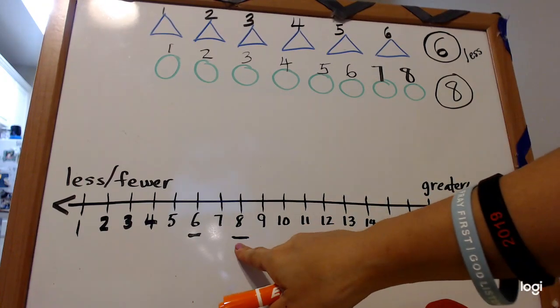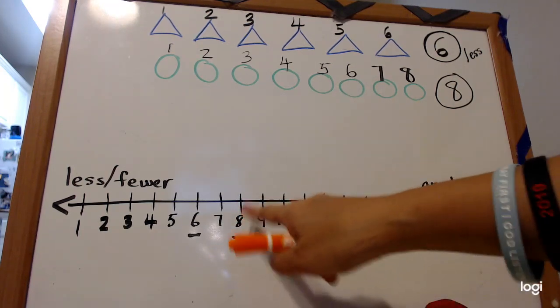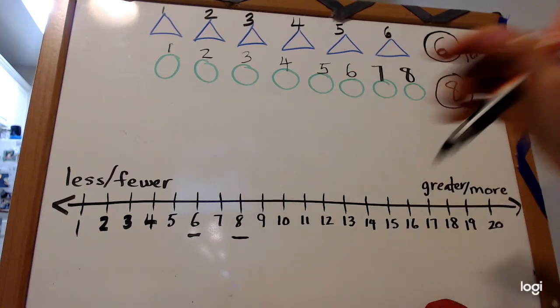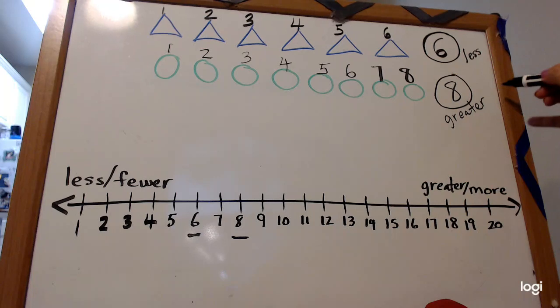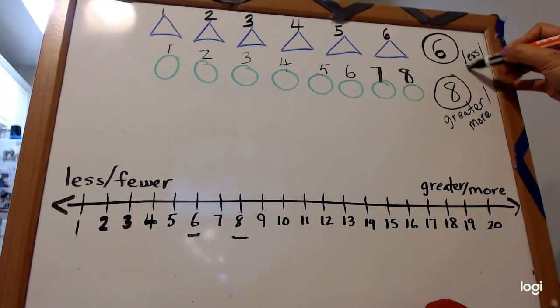Now eight compared to six, is eight greater or less? Since eight is on the greater side, eight is actually greater and we go ahead and put the word greater or the word more. So we do both. You can do both on this one too, less and fewer.